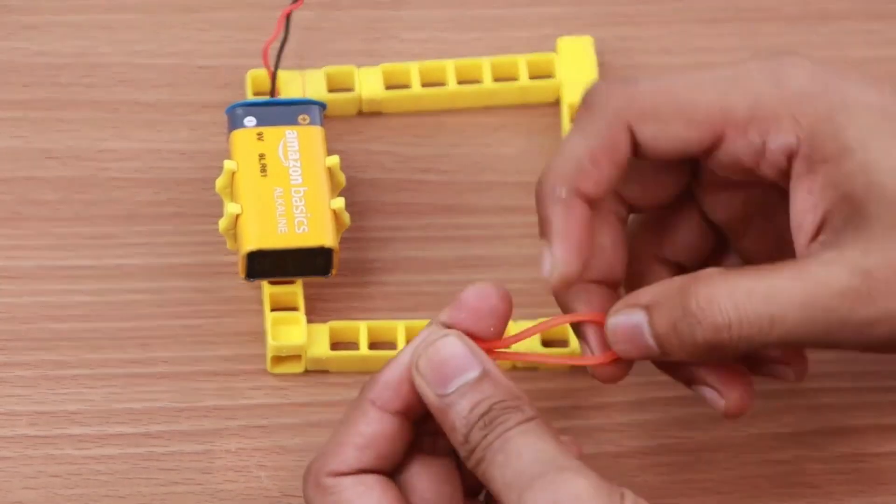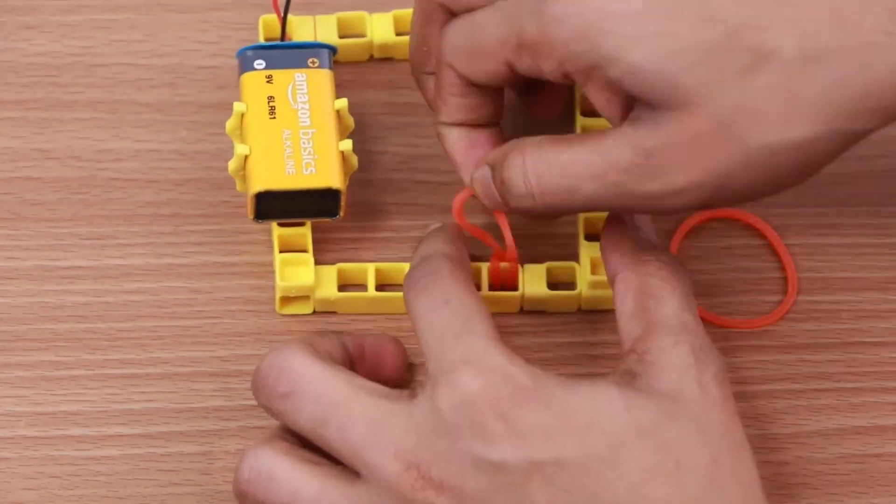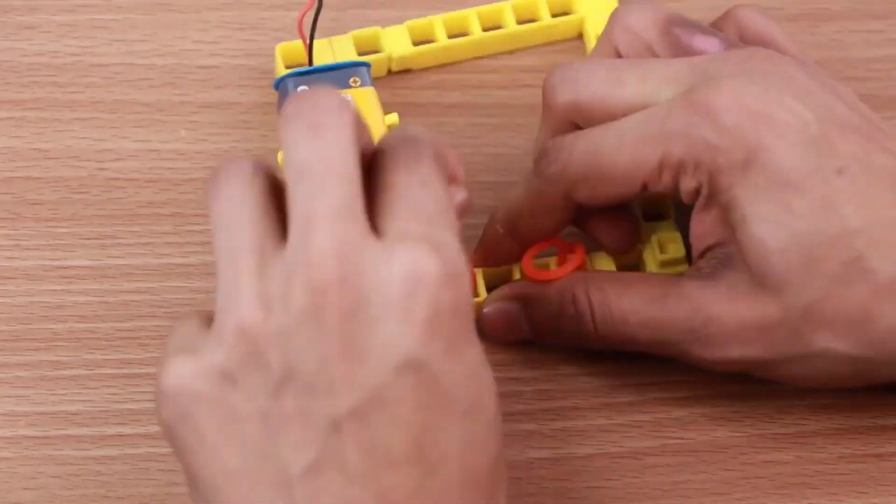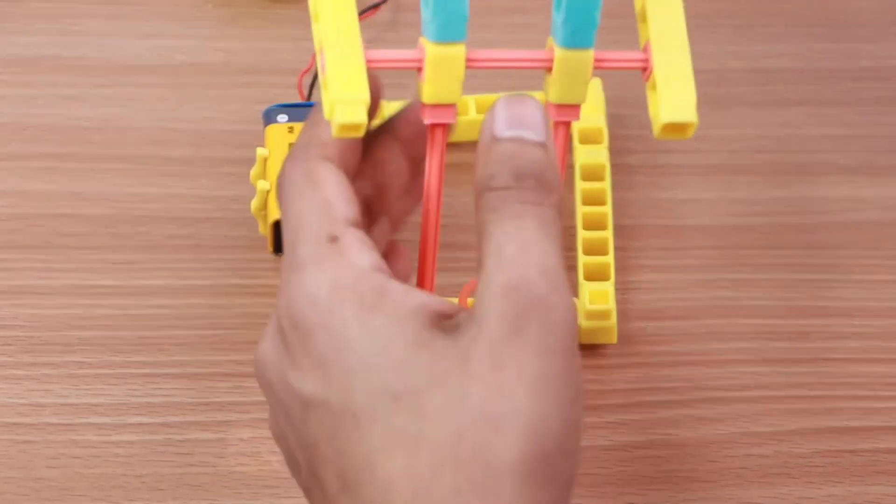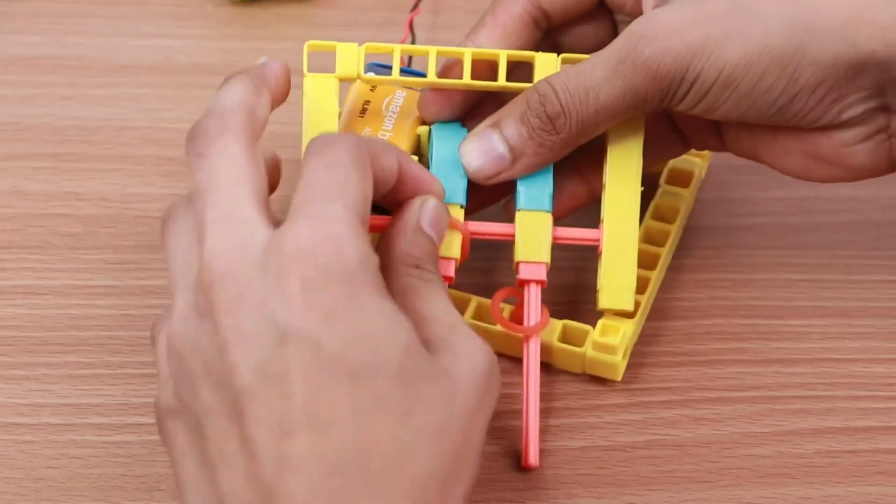Take two rubber bands and attach them to the drummer base. Attach the drumstick assembly to the base. Ensure the rubber bands slide properly on the drumsticks.